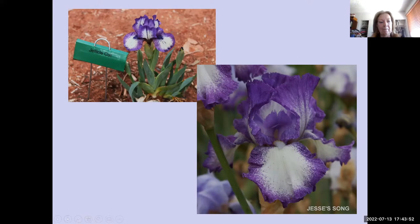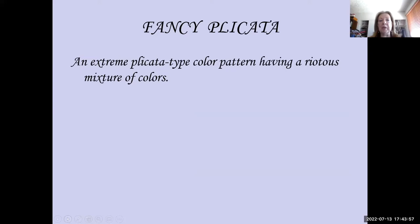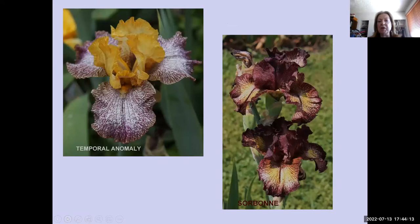The fancy plicata is an extreme plicata-type color pattern having a riotous mixture of colors, where the dotting or stippling is more intense. In other words, it's harder to see the ground color on the fancy plicatas. Temporal Anomaly by Rick Tasco is one of those, as is Sorbonne by Keith Keppel — there's just much more color patterning on the falls than in other blue-white plicatas.